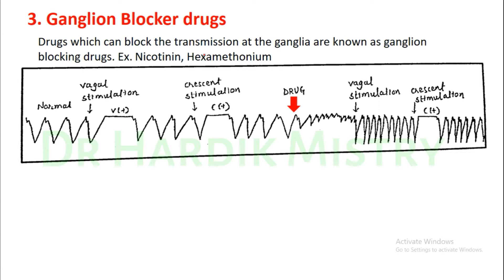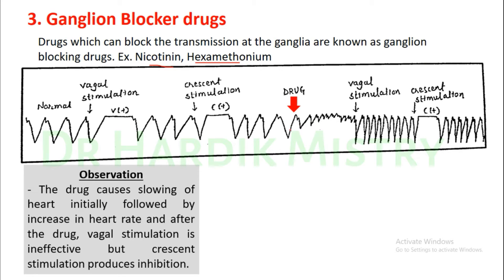Ganglion blocker drugs block transmission at the ganglia. These include nicotine and hexamethonium. The observation from the graph: the drug causes initial slowing of the heart followed by an increase in heart rate. After the drug, vagal stimulation is ineffective but crescent stimulation produces inhibition.